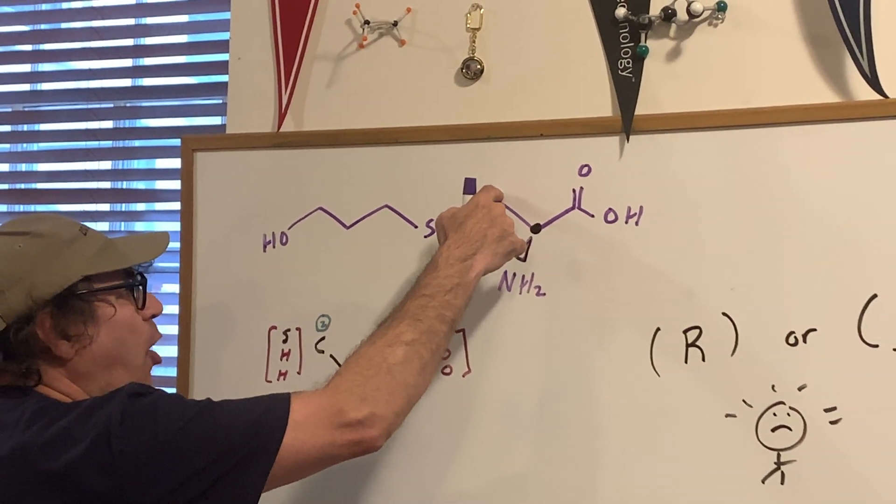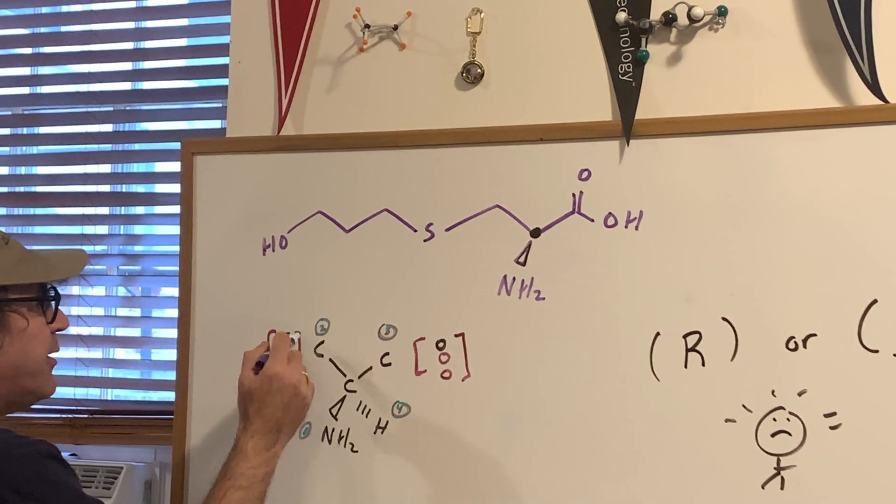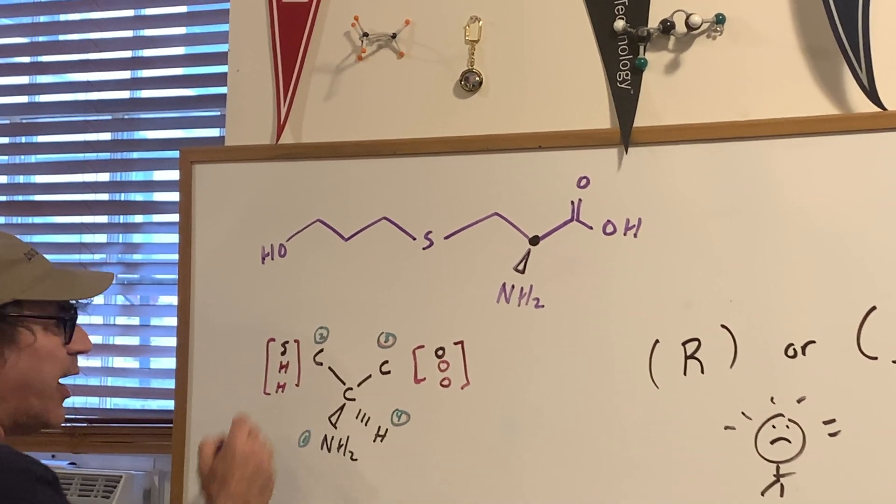Now, if you look at this carbon, what's the three groups coming off it? You have an S, an H, and an H.